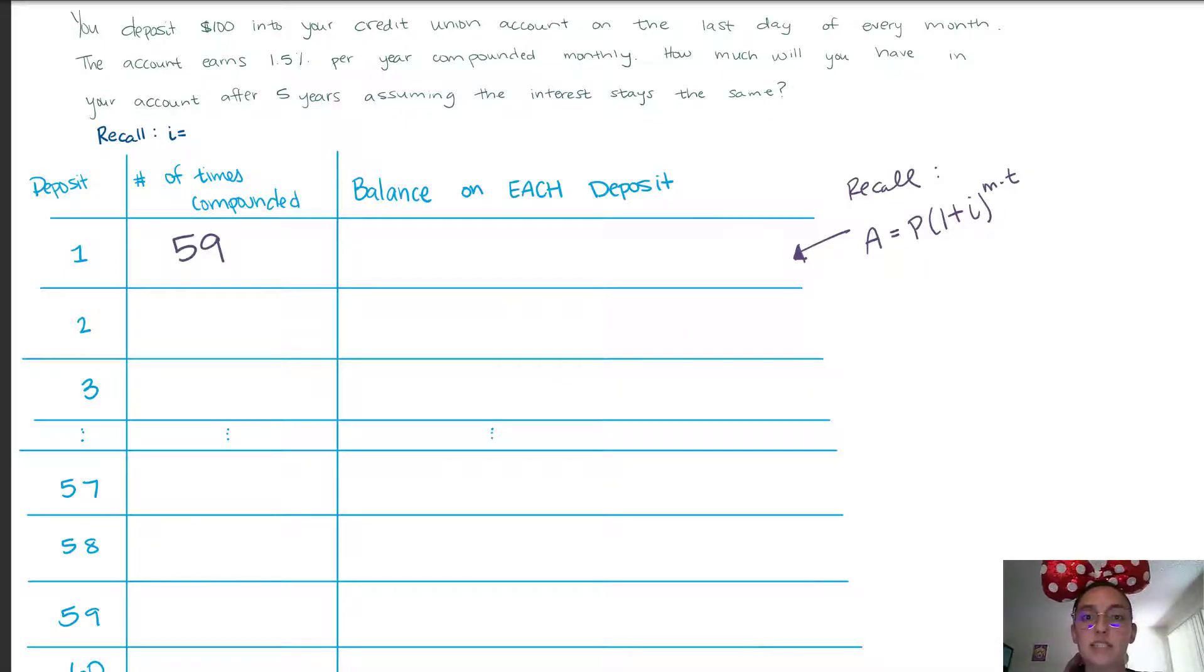So the first deposit is going to be compounded 59 times. Then similarly the second deposit, we're going to deposit it to our bank account at the end of the second month, meaning it'll get to compound 58 times. Are we seeing a pattern? This should then be 57.